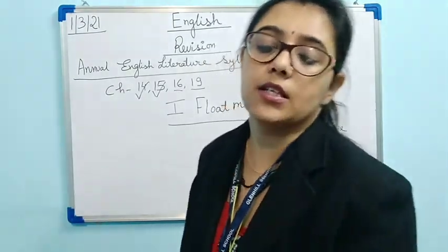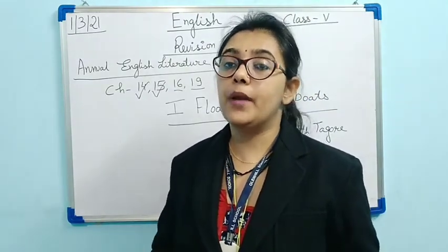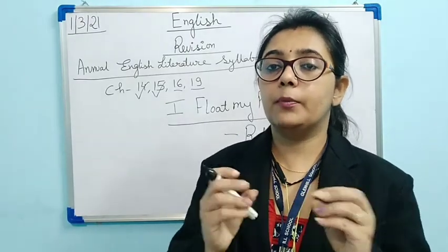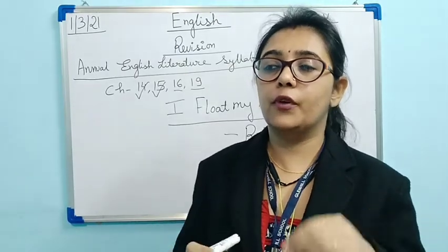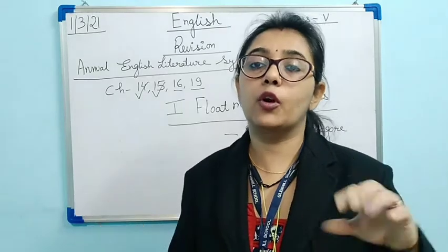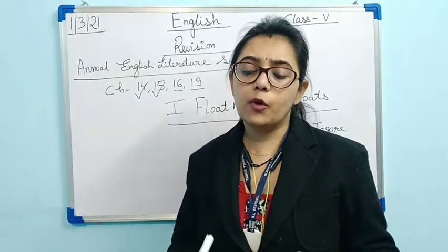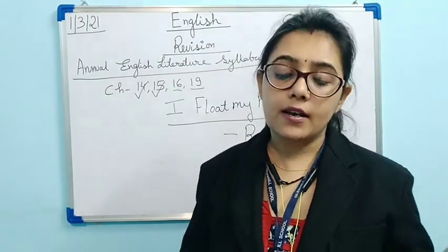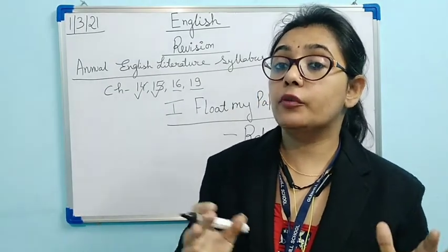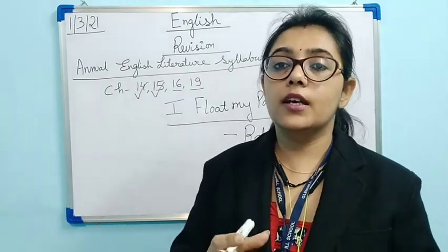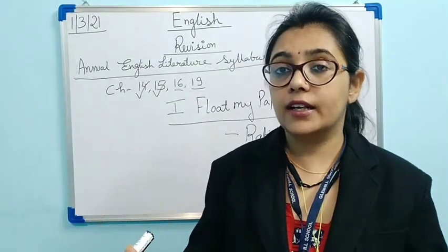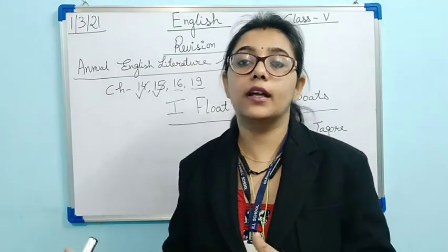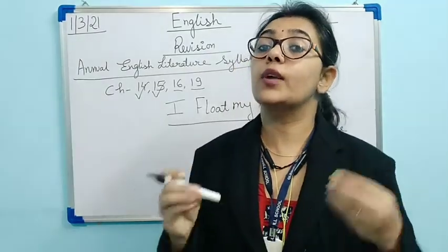The poet is imagining himself as a young boy who used to make paper boats — boats made from paper that you float on a river or any running water. The poet is making paper boats and writing his name as well as his village's name, then sailing the paper boat in the running stream. 'Running stream' means the river or water body is moving, not stagnant. The poet imagines that anyone in another village will get this boat and see the name and village, meaning he wants to make a new friend in another village.